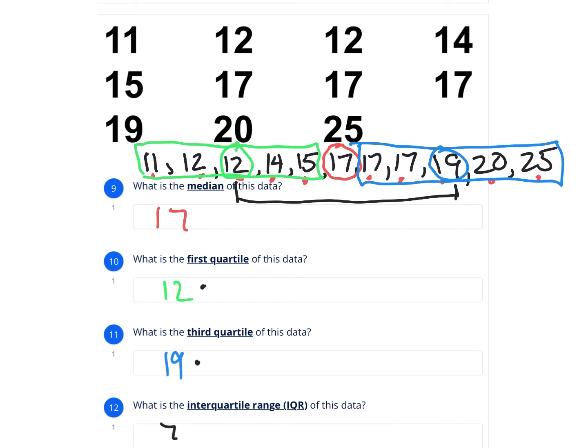So one more time. Median is the one in the middle. That was 17. First quartile is the middle of the first half, which in this one is 12. And the third quartile is the middle of the second half, which is 19. And then the interquartile range is how far apart those two numbers are, so we subtract them.